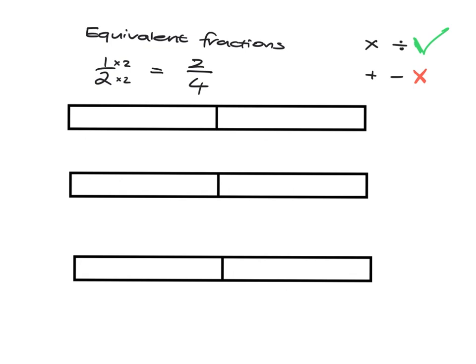How do we get equivalent fractions? If you multiply the numerator and the denominator by the same thing, you'll get an equivalent fraction. Multiply the numerator by 2 and the denominator by 2 — you get two-fourths, which is an equivalent fraction. You can also divide: multiply or divide the top and the bottom by the same thing and you get an equivalent fraction. What we'll see later is that this doesn't work with addition and subtraction.